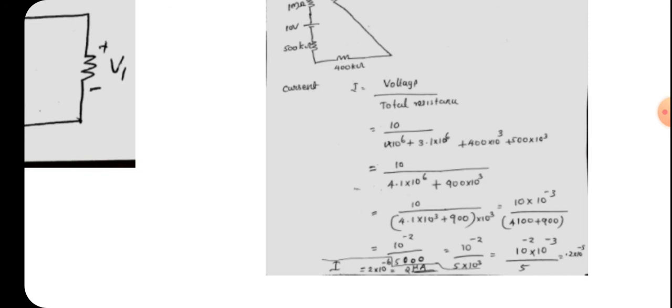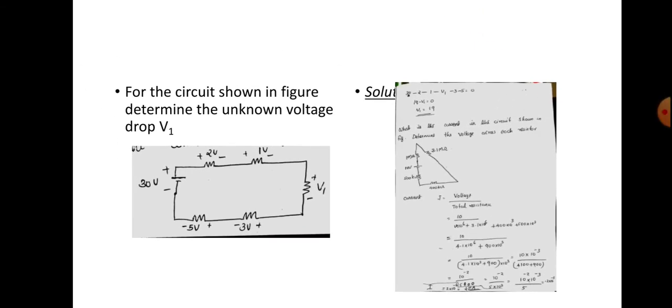The current value is 2 micro-ampere. The detailed mathematical calculations should be done in your notebook. The steps are given in the notes, so go through those notes and verify the value of I as 2 micro-ampere. The important thing is to understand the logic.